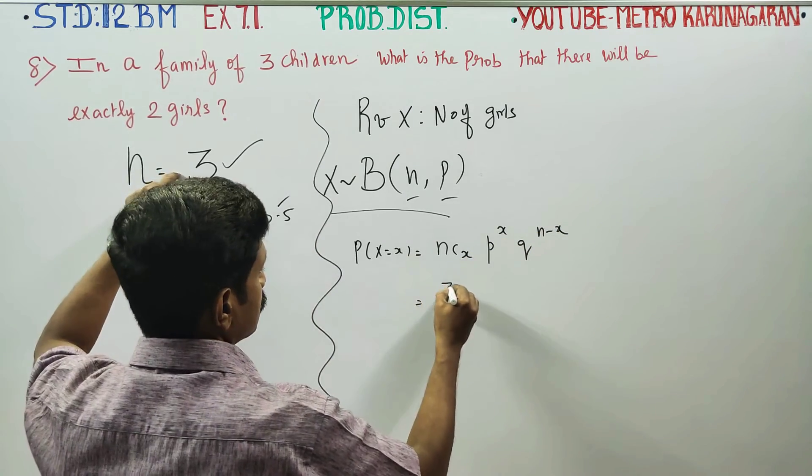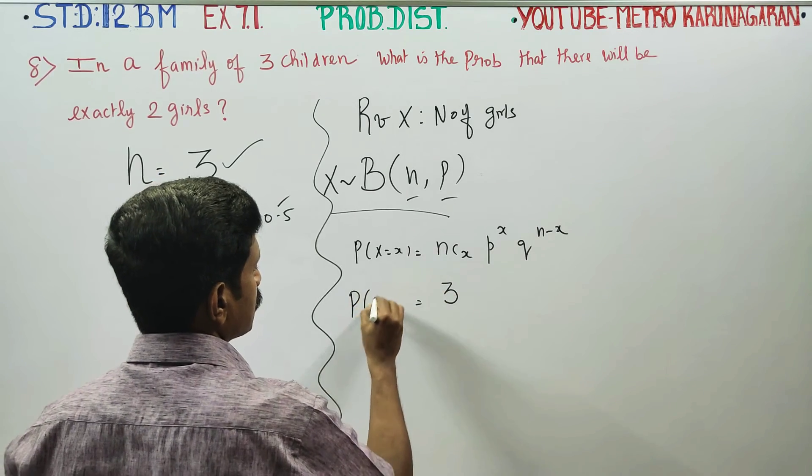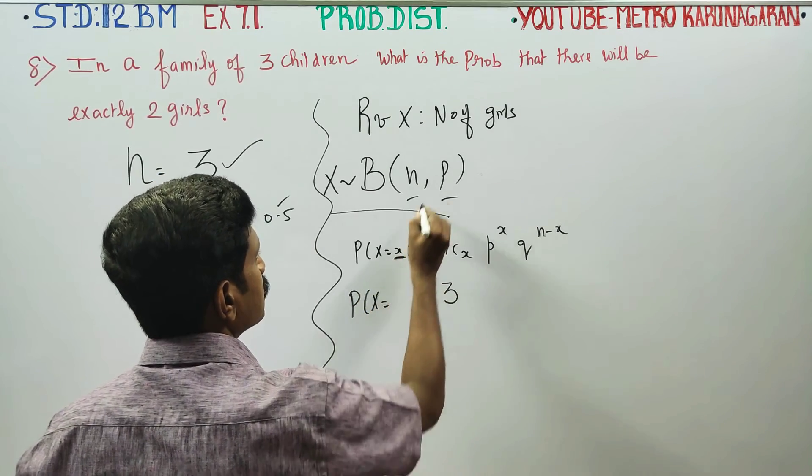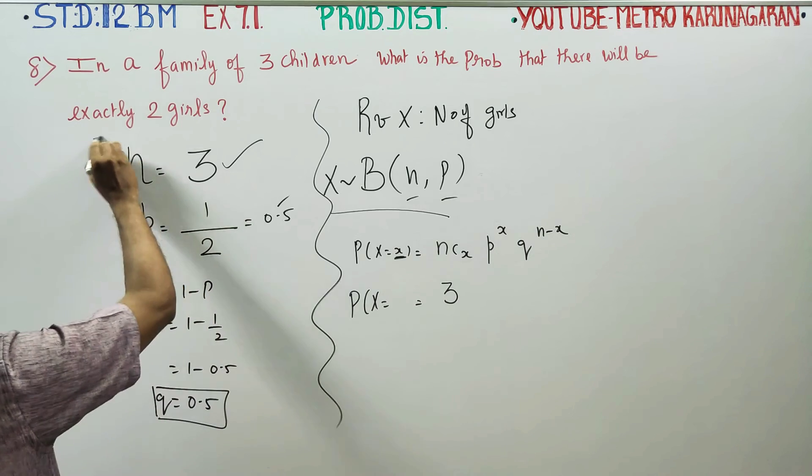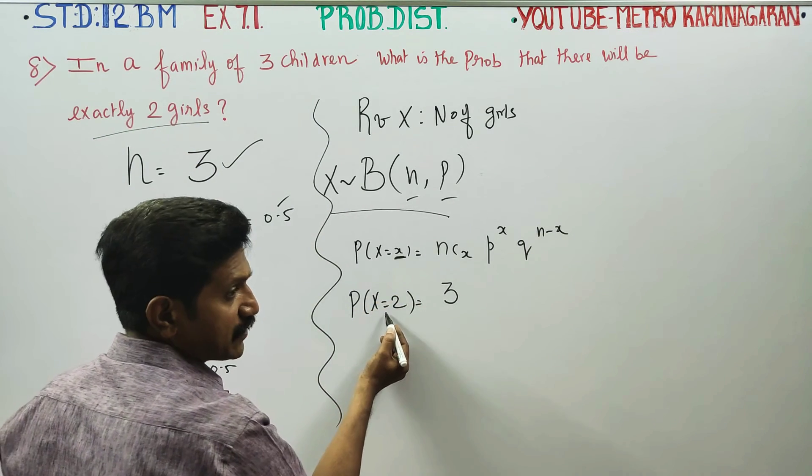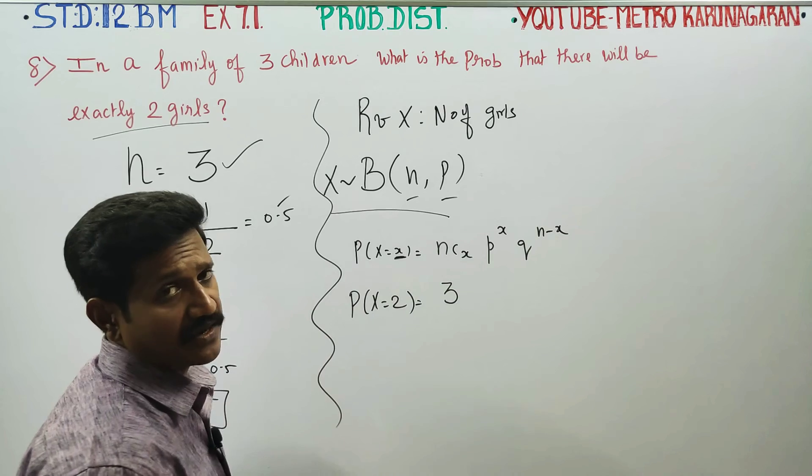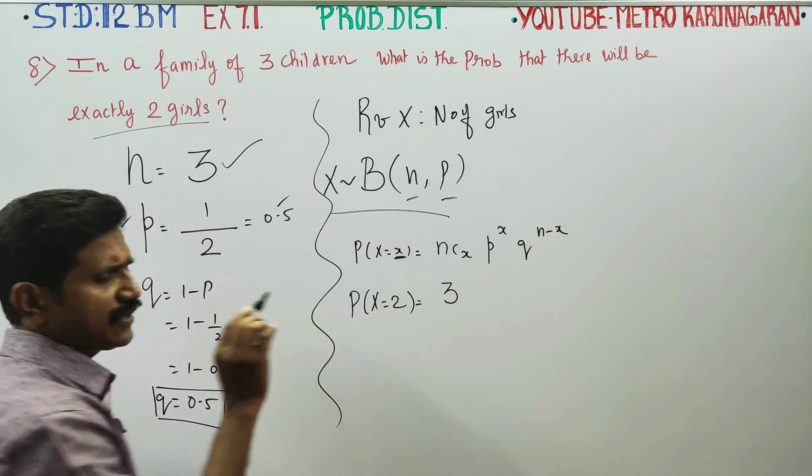Then n is 3. If you choose x equal to female child, exactly - not at least, not greater than or equal to - exactly equal to 2.